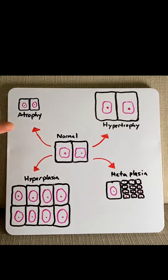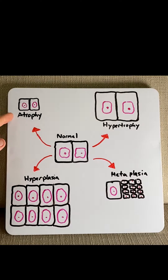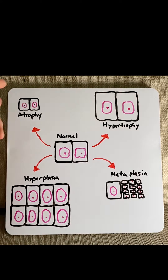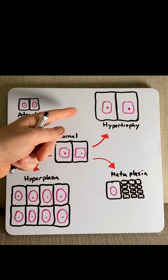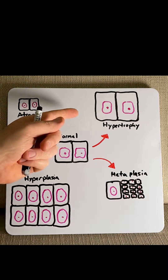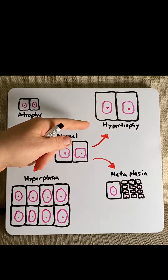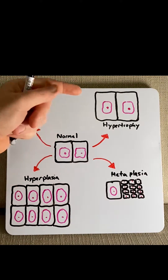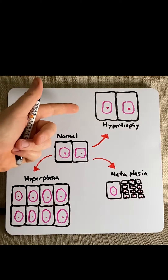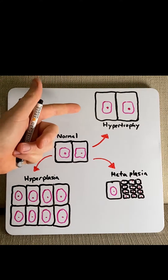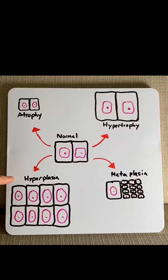Generally speaking, adaptation can be either physiological or pathophysiological. A physiological example of atrophy would be skeletal muscles after disuse, while a pathophysiological example would be brain tissue in dementia. For hypertrophy, a physiological example would be the uterus due to hormonal stimulation in pregnancy, while a pathophysiological example would be cardiac muscle when exposed to high blood pressure or aortic stenosis.